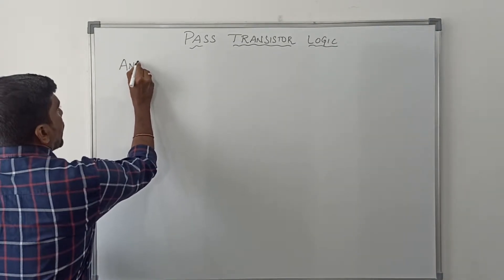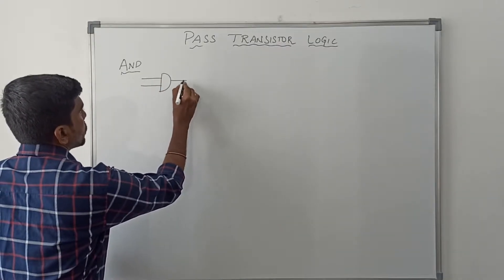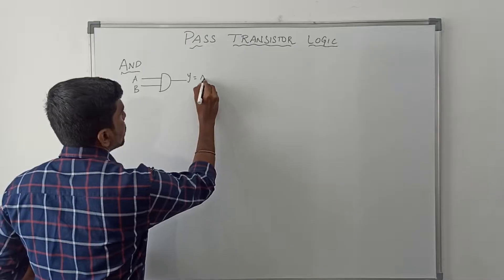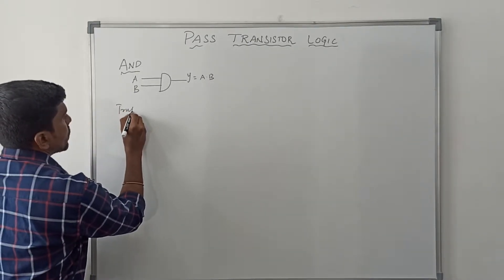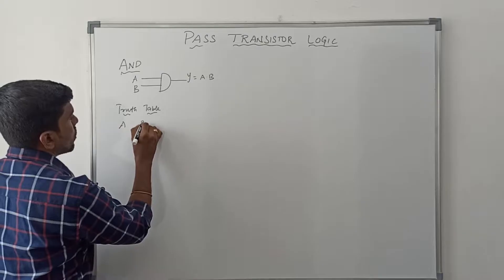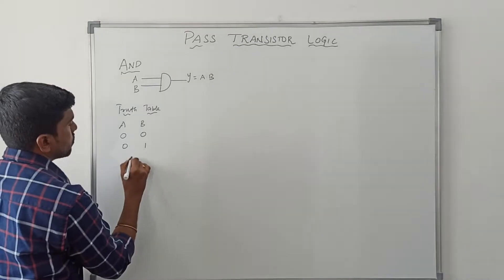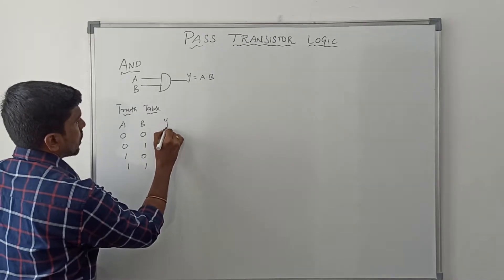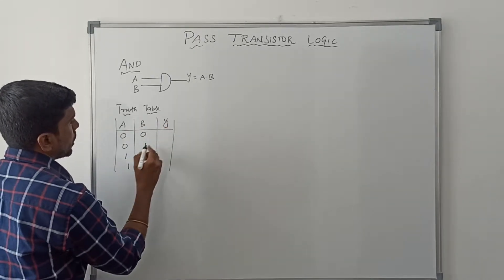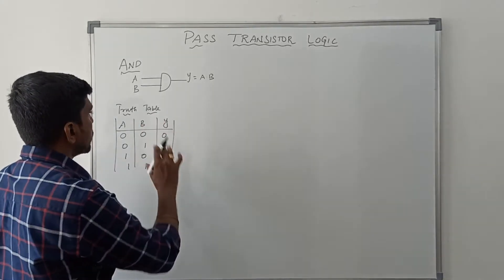First I design AND gate using pass transistor. Let me draw the symbol. So it is a symbol of AND gate. The input variables are A and B, and Y equals A dot B. Then write the truth table. So in this logic operation, we have two inputs A and B, making four combinations of input values, with corresponding output Y. You know the AND gate property — both inputs are high, that time only output is 1. Remaining all cases, output value is set to 0.